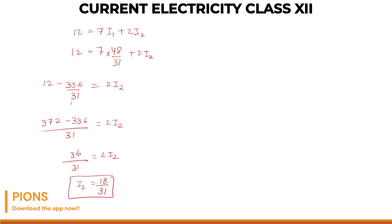What is I3? I3 is I1 plus I2. What is I1? 48 by 31 plus 18 by 31. This will be 66 by 31. This is our current I3.